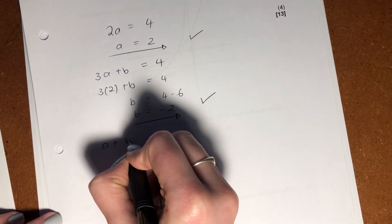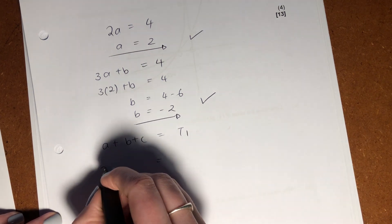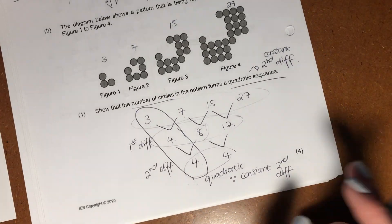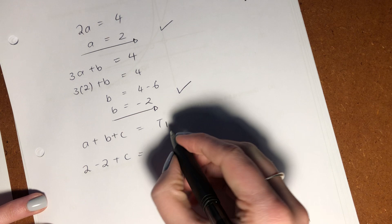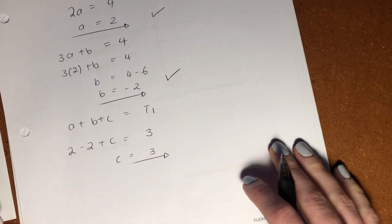We know that A plus B plus C equals T1. A is 2. B is negative 2. And T1, what does T1 equal, guys? It equals 3. Go sub that in over here. Make that 3. And we can see that C equals 3.